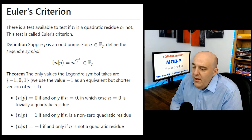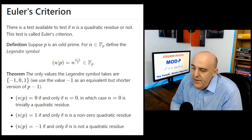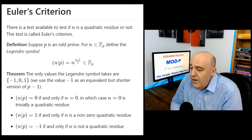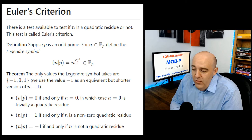There are only three possible values for this Legendre symbol: minus 1, 0, or 1, no matter what. We use minus 1 to represent p minus 1 — it's just a bit cleaner. When the Legendre symbol is 0, n is 0, which trivially means it's a quadratic residue. The interesting case is when it's 1 or minus 1 for all non-zero elements: 1 means quadratic residue, and minus 1 means it is not a quadratic residue.